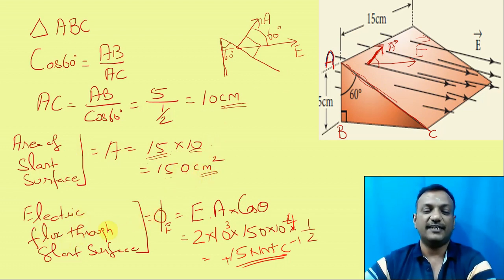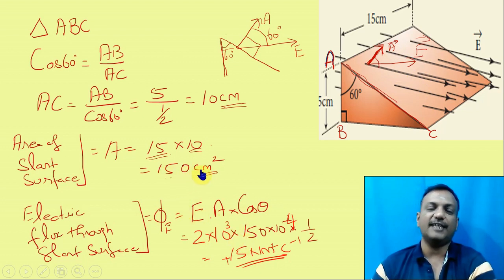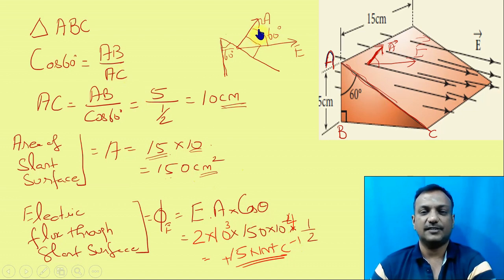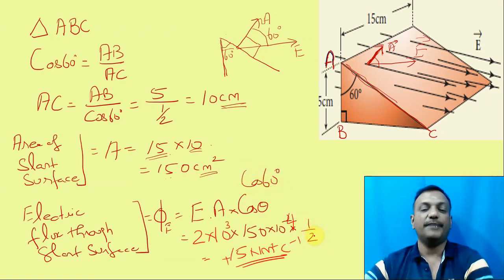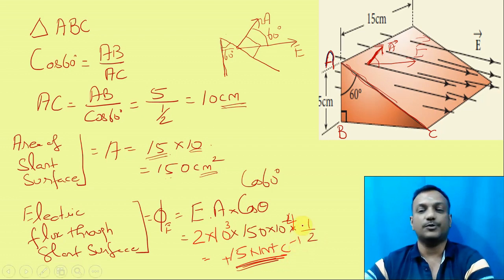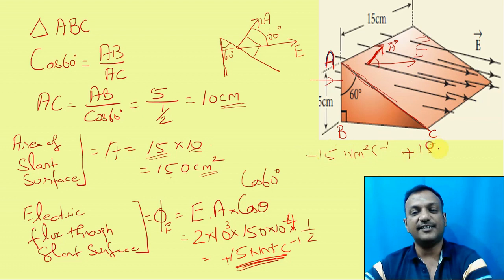Now the electric flux through the slant surface: Phi equals E into A into cos theta. E value is 2 into 10 cubed. Area is 150 cm² converted to meters squared: 150 into 10 to the power minus 4. The angle is cos 60 degrees, which is 1/2. The flux through the slant surface is plus 15 Nm² C⁻¹.